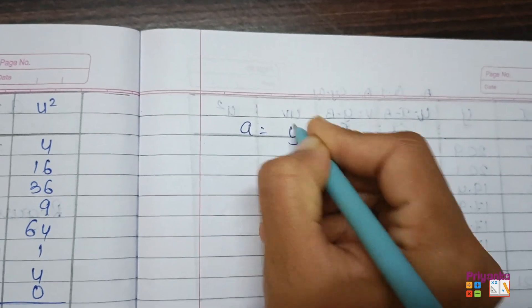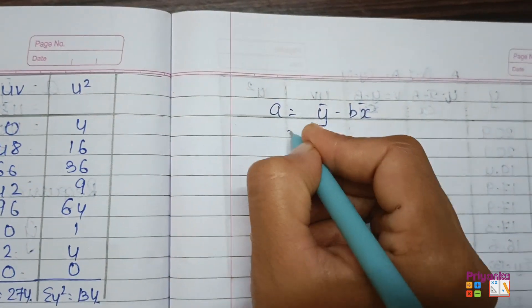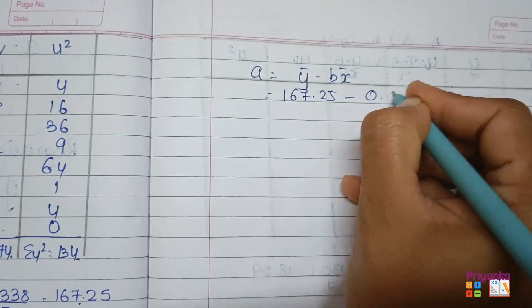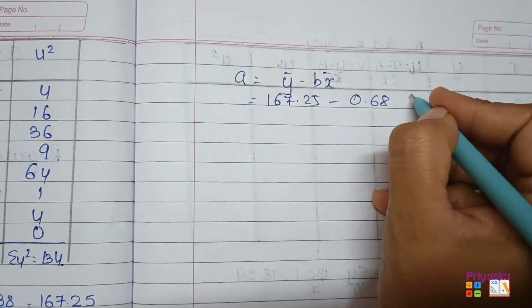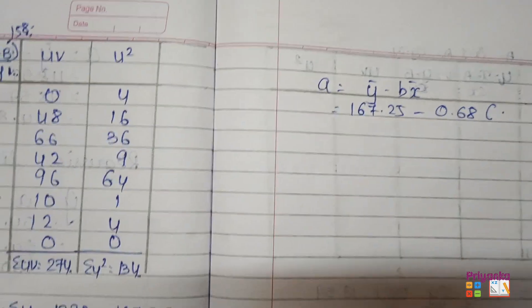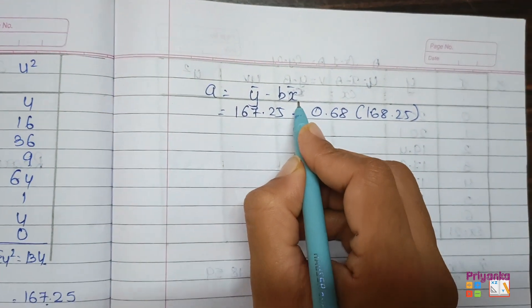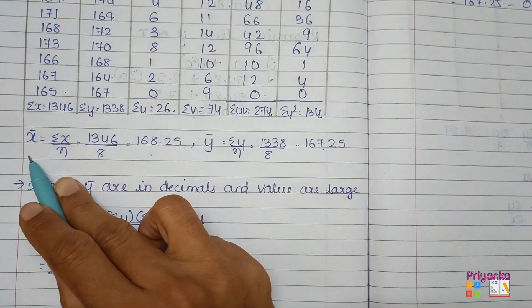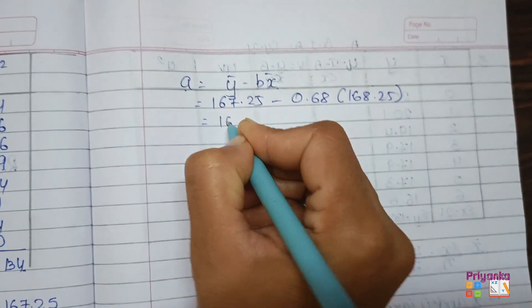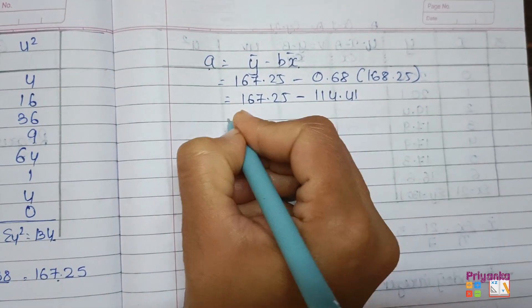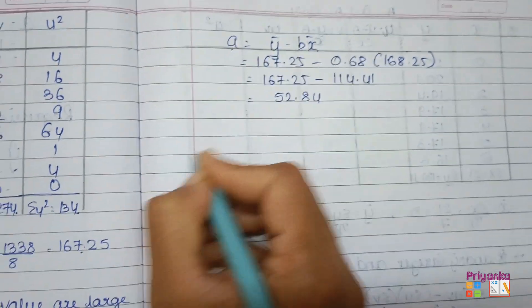Next, find A = y-bar minus B × x-bar. Y-bar is 167.25, minus B = 0.68, multiplied by x-bar = 168.25. The multiplication gives 114.41. Subtracting: A = 52.84.